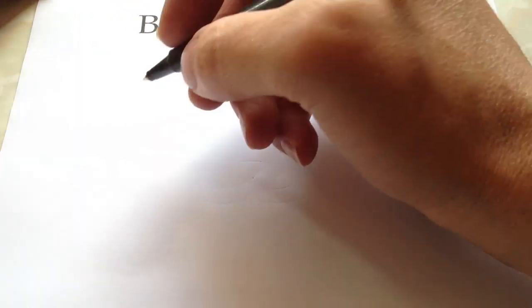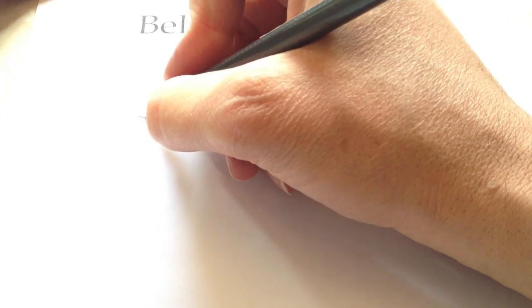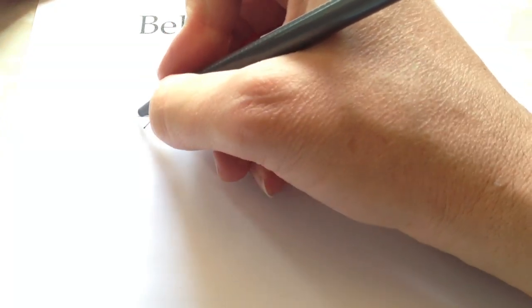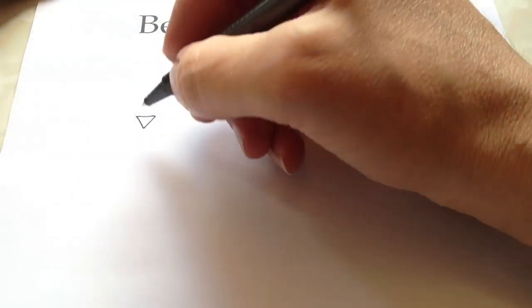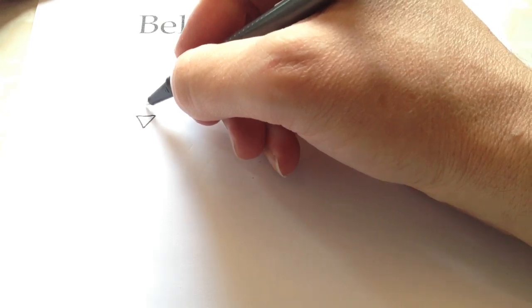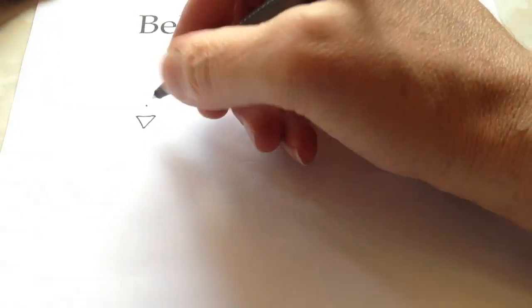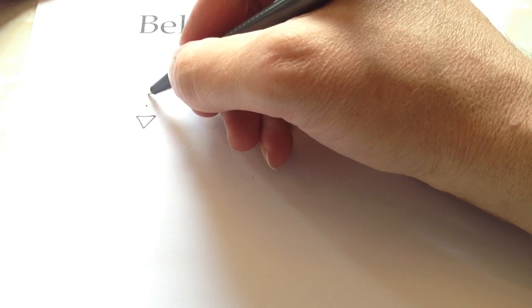What you're going to do is draw a neat, upside-down equilateral triangle. Next, this distance here, do one dot, and that distance, do another dot.